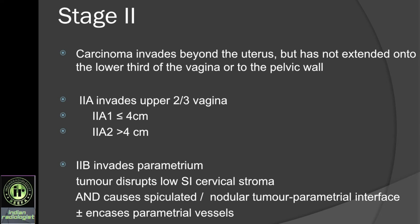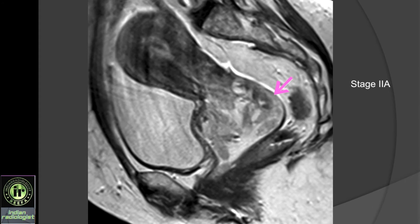Moving on to stage 2 cancers. These extend beyond the uterus but not to the lower third of vagina or the pelvic side wall. Stage 2a involves the upper two-thirds of vagina, with subgroups based on size. Stage 2b extends into the parametrium, in which you lose the low signal rim of the cervical stroma, causing an irregular and nodular outline at the tumor-parametrium interface, and it might encase the parametrial vessels. Here we have a tumor in the cervix extending into the upper vagina — involving the posterior vaginal fornix and anterior vaginal fornix — so this is stage 2a.